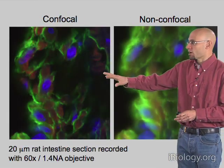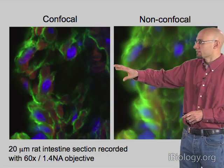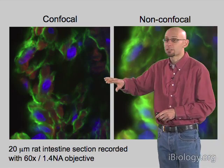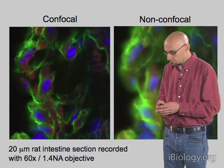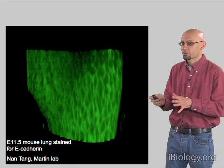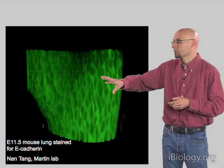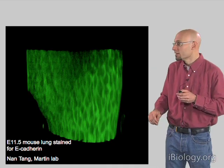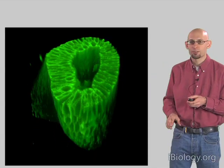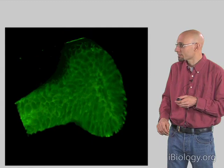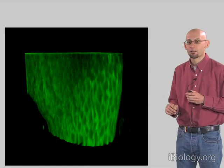Putting this all together: here's our non-confocal image on the right, our confocal image on the left. We've taken the out-of-focus light in the non-confocal version and completely eliminated it by scanning the spot across the sample, recording only the light that's in focus and makes it through our pinhole. In a 3D context, if we take many of these images at different heights and reconstruct them in the computer, we get very beautiful images like this high-magnification view of the mouse lung, where we can now see individual cells and their membranes.